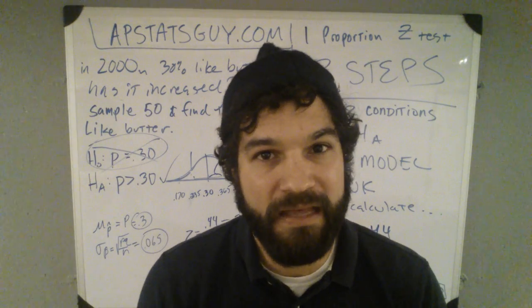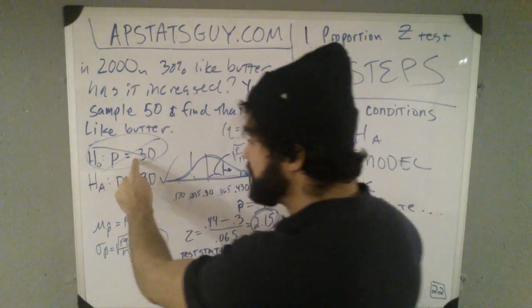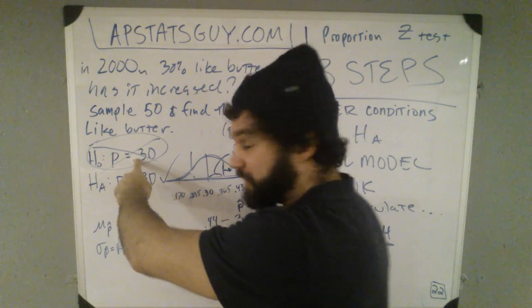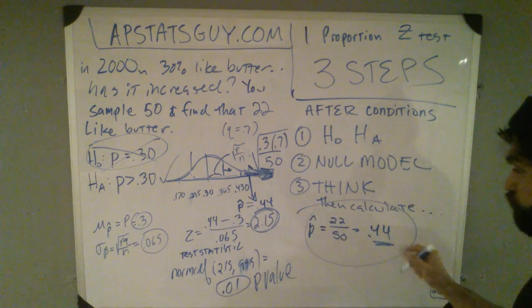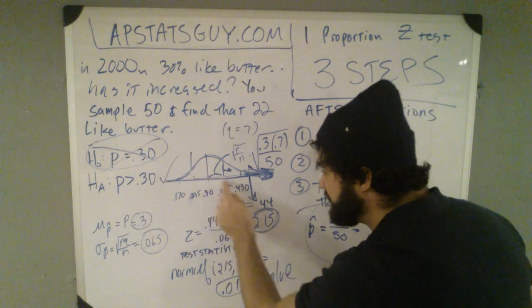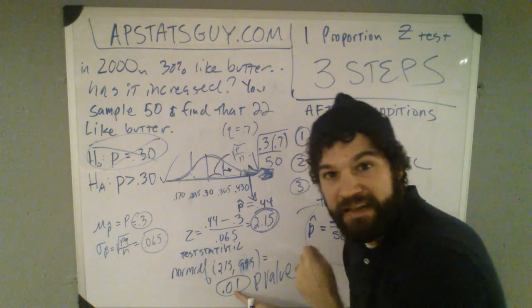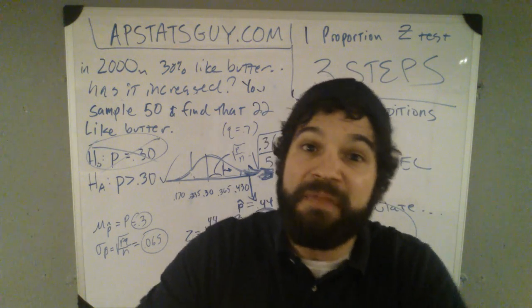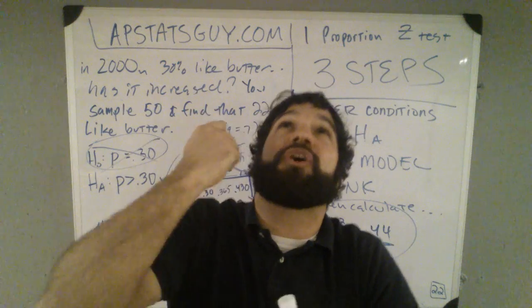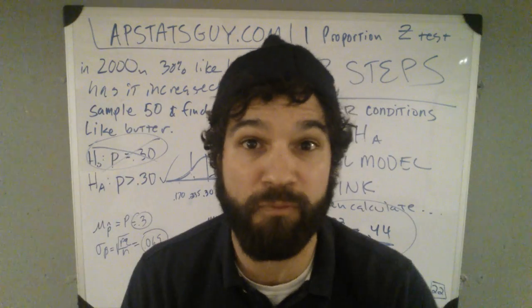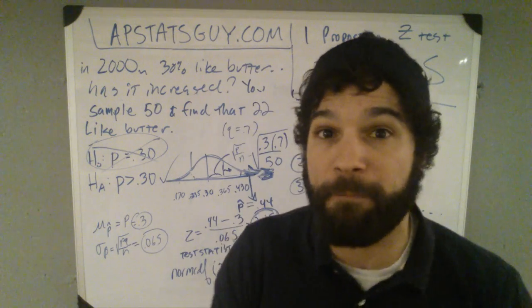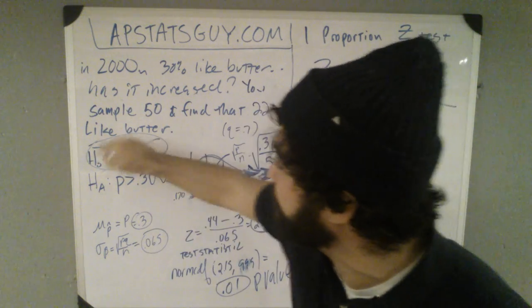Here's why. Here's why. Because if 30% of people did like butter, the likelihood of me getting this p-hat randomly, if that was true, is so unlikely to have happened randomly. This is what I'm saying. Getting that sample is so unlikely to have happened randomly that I don't think it was random. I think more people like butter now. I don't think only 30%.